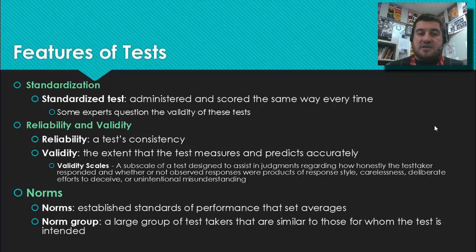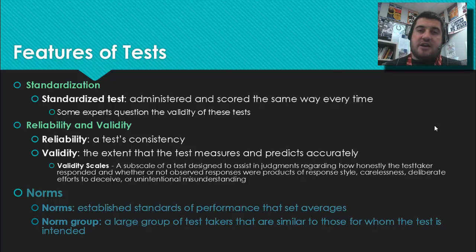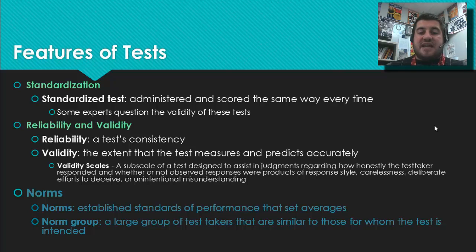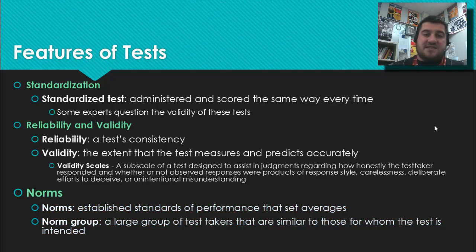Norms are the fourth feature. Norms are groups — we get our norms from norm groups. Norm groups are a large group of test takers similar to those for whom the test is intended. For the SAT, our norm group would be high school students, and those students give us our norms, which are established standards of performance that set the averages for the test.